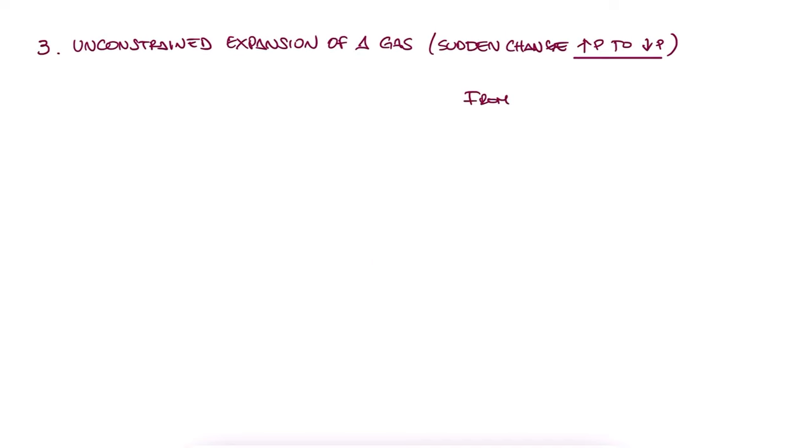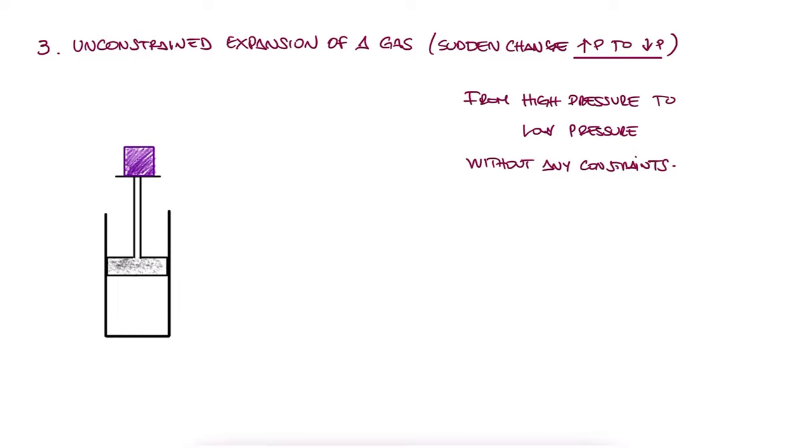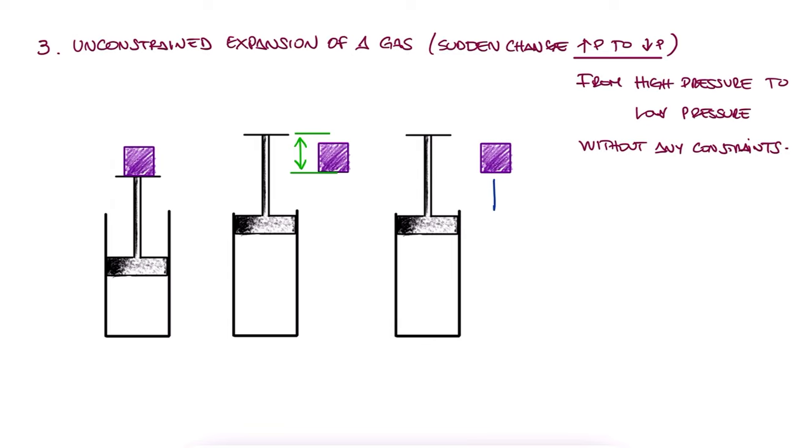Unconstrained expansion means that we go from a high pressure state to a lower pressure state without constraining it in any way. For example, we can have a piston cylinder device that has a mass on top of the piston. If we remove this mass, the piston will immediately go up, higher than where we took the mass off. And if we want to go back to our original state, we would have to put work into the system to bring down the piston to its original position. This means that the process is irreversible.